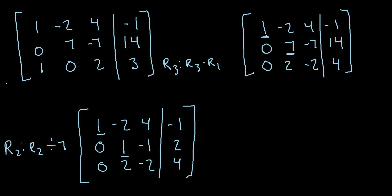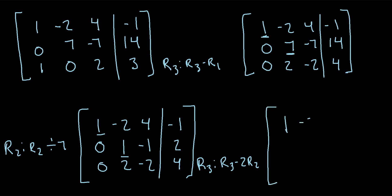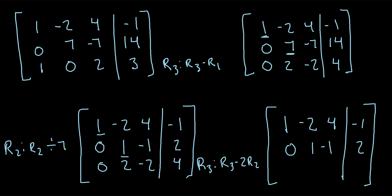Both pivot entries are now 1. We need zeros below all pivot entries, so the 2 in row 3 beneath the second pivot needs to become 0. We do row 3 minus 2 times row 2: 0 minus 0 stays 0; 2 minus 2 is 0; negative 2 minus 2 times negative 1 gives negative 2 plus 2 which is 0; and 4 minus 2 times 2 gives 4 minus 4 which is also 0. Row 3 is now all zeros.